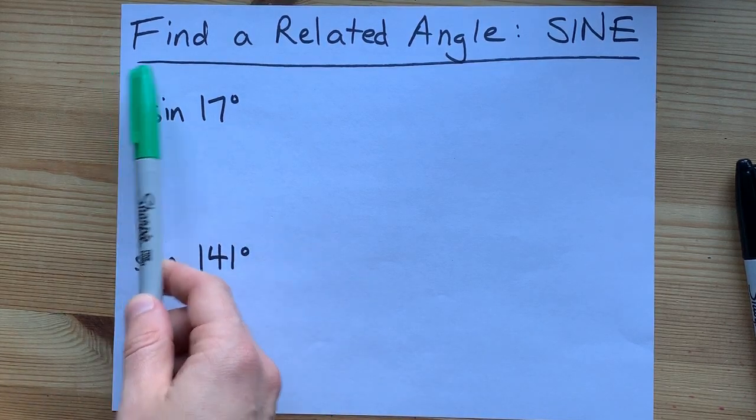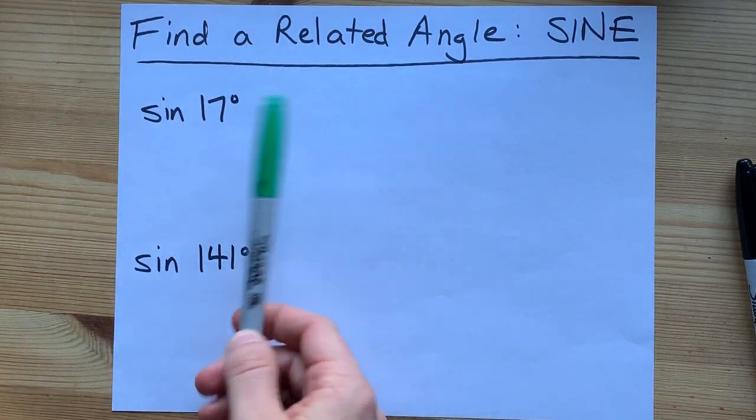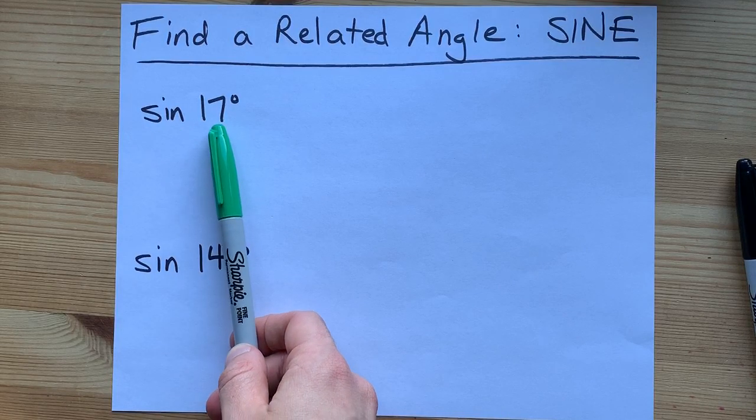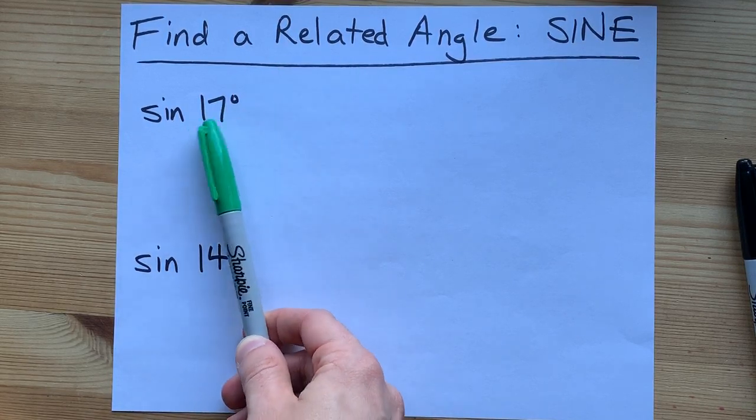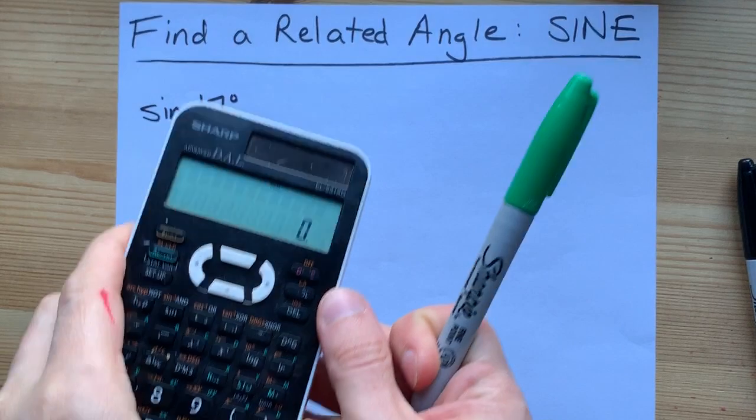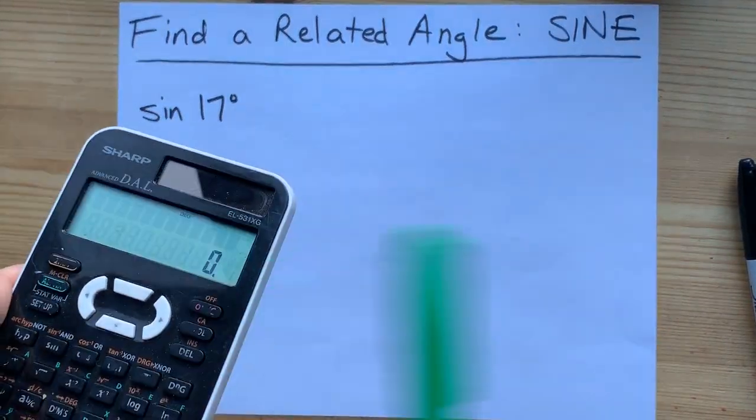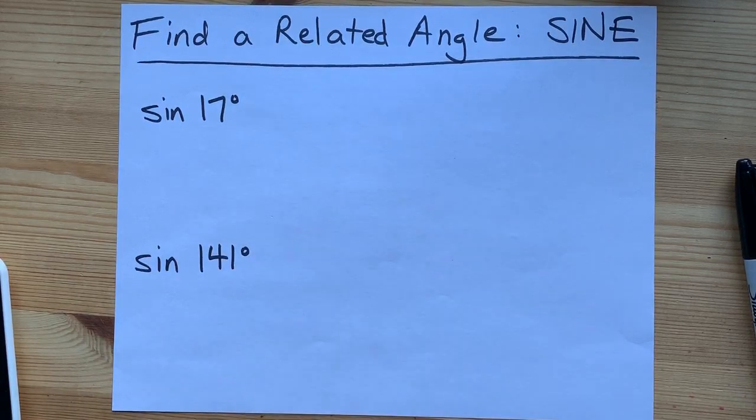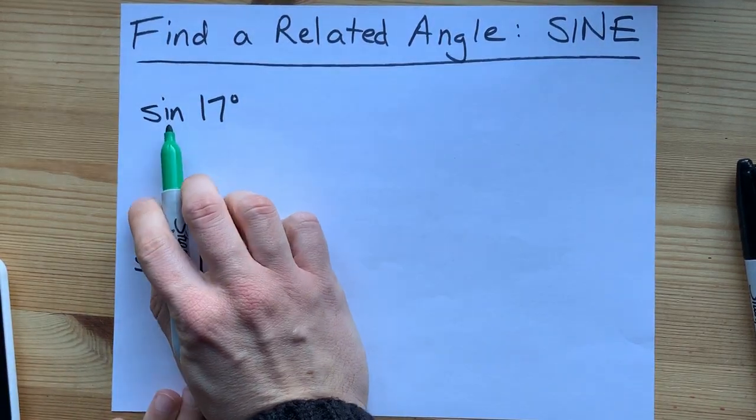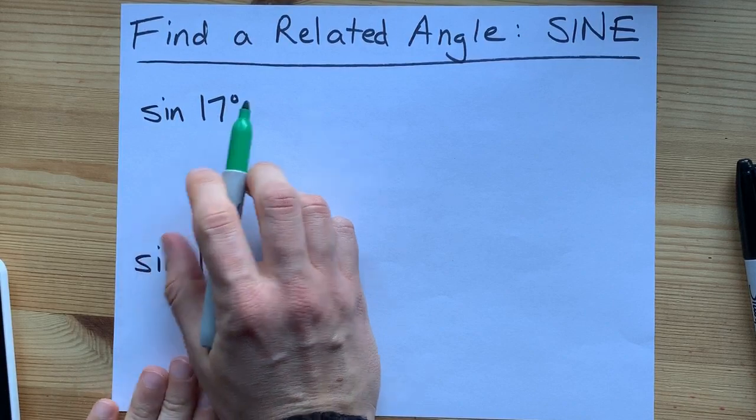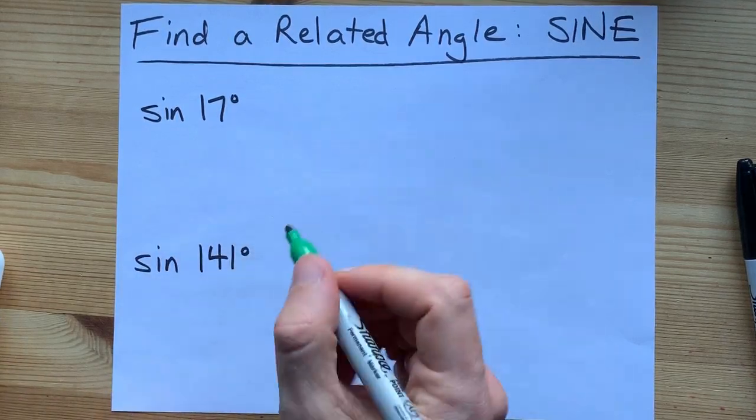When you're being told to find a related angle for, say, sine of 17 degrees, you're being asked for an angle that gives you the same answer on your calculator when you do the sine of 17 degrees and the sine of this other angle. The way that you do it is to figure out whether or not the sine of 17 degrees is positive or negative.